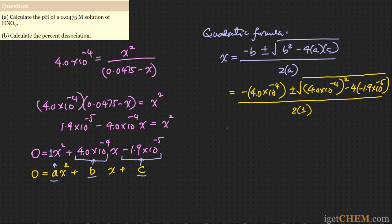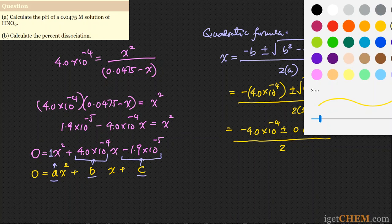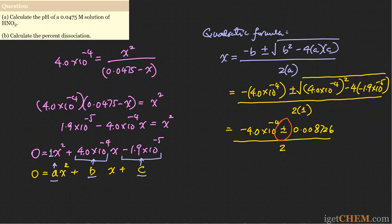Evaluating the expression, the square root term is approximately 0.008726, so we have (−4.0 × 10⁻⁴ ± 0.008726) / 2. The plus sign gives x = 0.00416 and the minus sign gives x = −0.00456. There are two solutions; we need to determine which is correct.